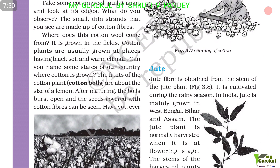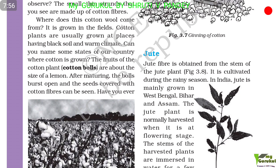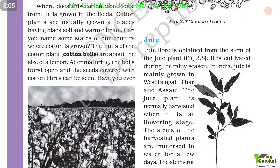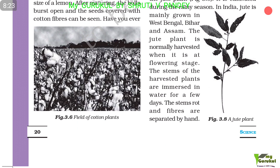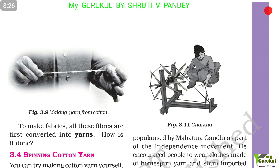Jute fiber is obtained from the stem of the jute plant. It is cultivated during the rainy season in India. Jute is mainly grown in West Bengal, Bihar, and Assam. The jute plant is normally harvested when it is at the flowering stage. The stems of the harvested plants are immersed in water for a few days until the stems rot, and then the fibers are separated by hand.